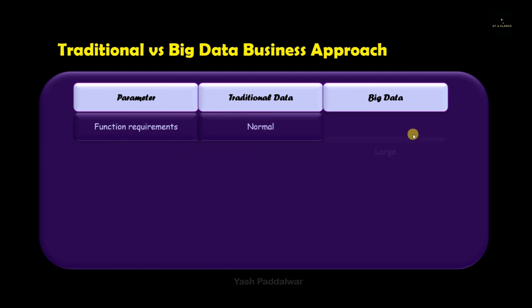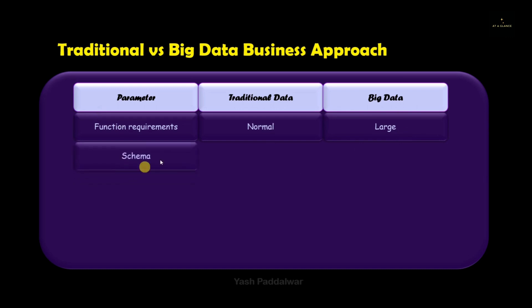The next parameter is functional requirements. The traditional data approach requires normal functional requirements, while the big data approach requires very large functional requirements because robust and complex algorithms are needed to process huge amounts of data.